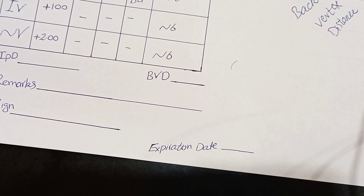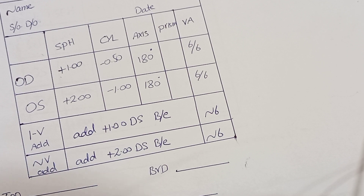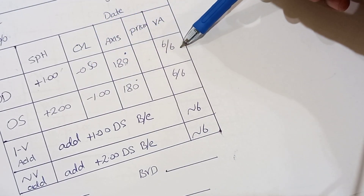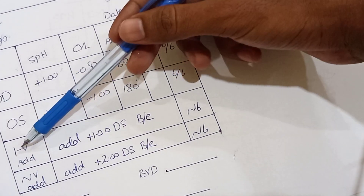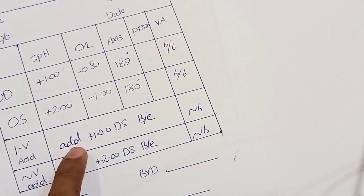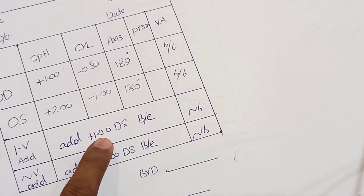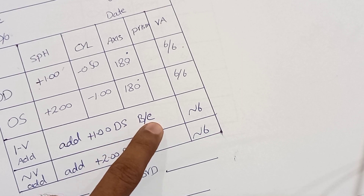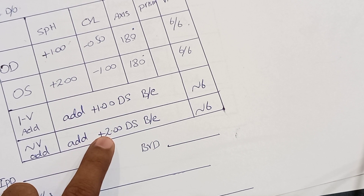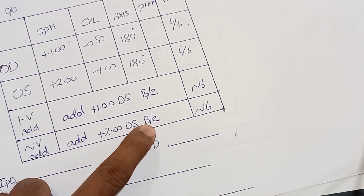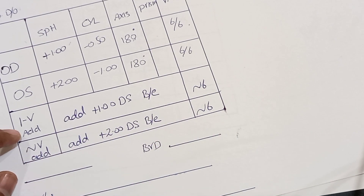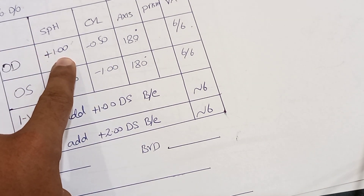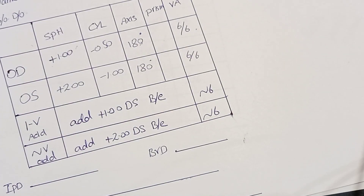The second prescription card is essentially the same as the first, with boxes for spherical, cylindrical, prism, and visual acuity for both eyes. For intermediate vision, the addition can be written as 'Add +1 DS' (dioptric sphere) for both eyes, and 'Add +2 DS' for near vision in both eyes. The addition in intermediate or near vision form is added to the spherical correction of the distance vision.